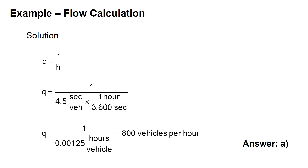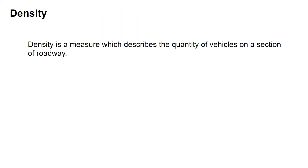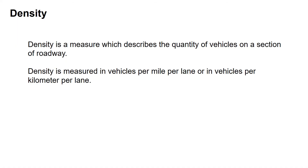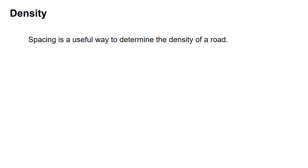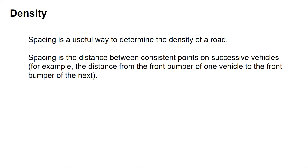Density is a measure which describes the amount of vehicles on a section of roadway, and it's typically measured in vehicles per mile per lane or vehicles per kilometer per lane. Spacing is a useful way to determine the density of a road. It is related to headway but based on distance instead of time — specifically, the distance between consecutive points on successive vehicles, such as from the front bumper of one vehicle to the front bumper of the next.